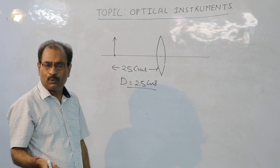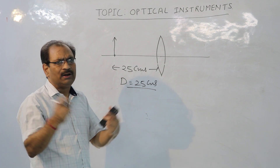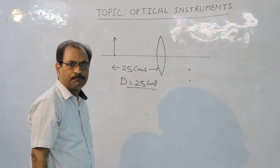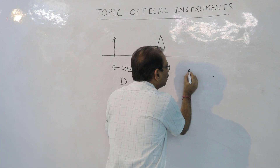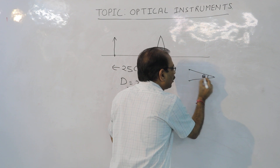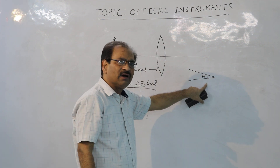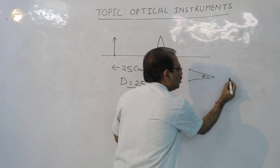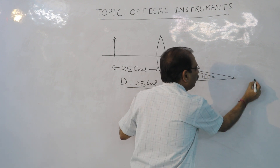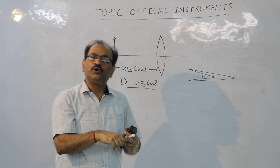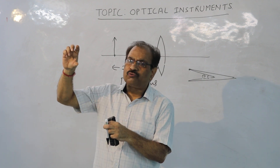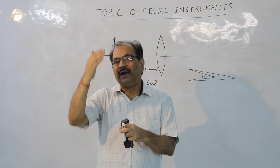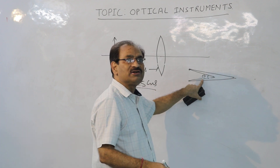Now let us come to concept number two: angular magnification. If I have two points — point number one and point number two — and you are viewing them, the angle subtended is called theta. This angle is called the angular limit of resolution. If you increase the distance, the angle will become smaller. You will be able to see these two points separately from each other only up to some limit, and that limit is basically called the angular limit of resolution, represented by theta.